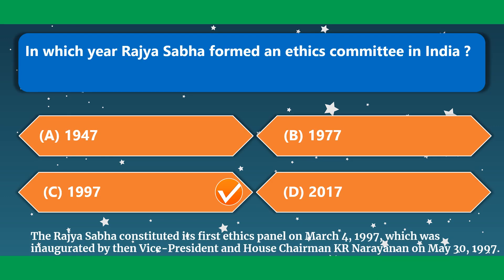In which year did Rajya Sabha form an ethics committee in India? It was 1997. The Rajya Sabha constituted its first ethics panel on March 4, 1997, which was inaugurated by then Vice President and House Chairman K.R. Narayanan on May 30, 1997.